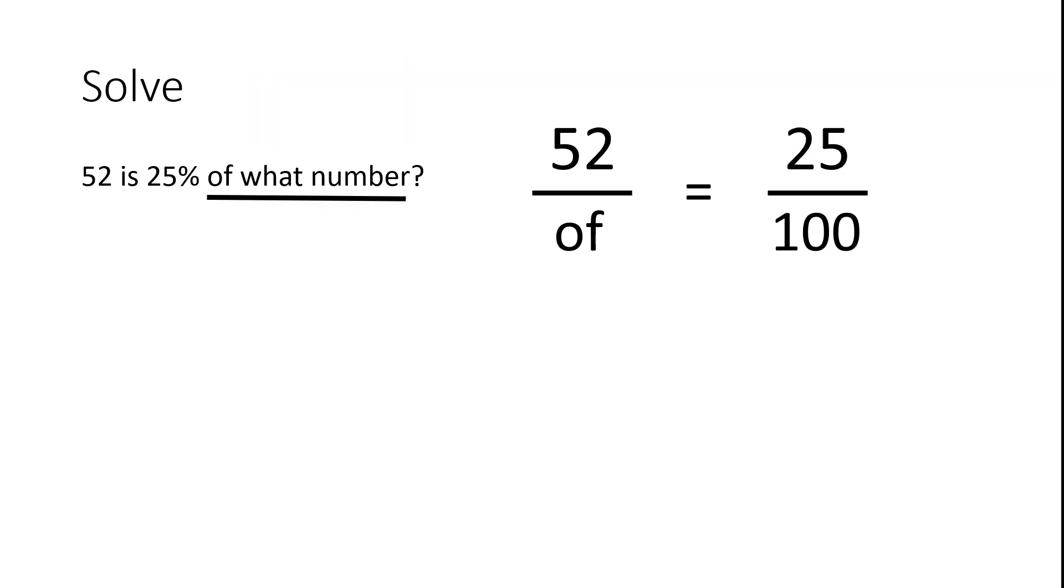Next, we see 'of what number.' This is what we are trying to figure out. So, wherever we see the word of, we will write the variable n. n is for Nancy. And that is it.